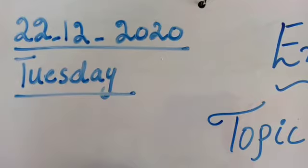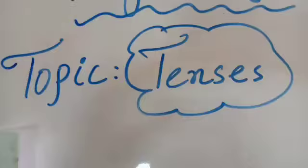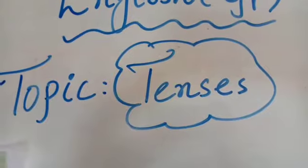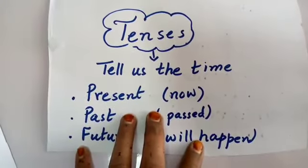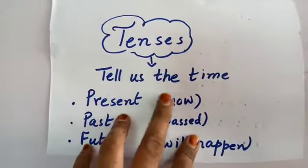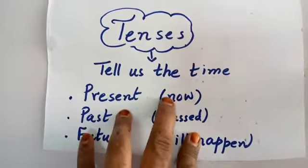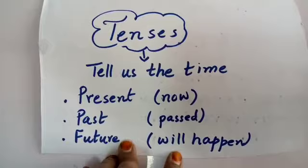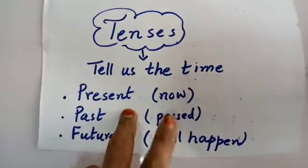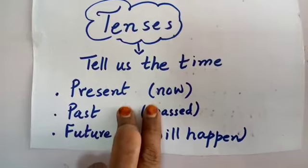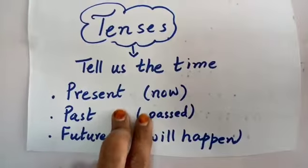Today the date is 22-12-2020 and the day is Tuesday. Grade 3, today our focus in grammar will be tenses. What do you understand by the word tenses? Tenses tell us the time — for example, present tense, past tense, or future tense. Present tense tells about anything that is happening now.